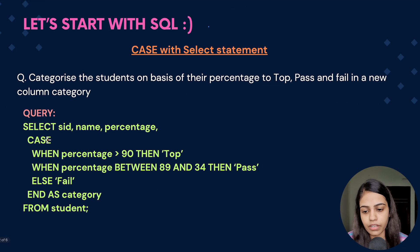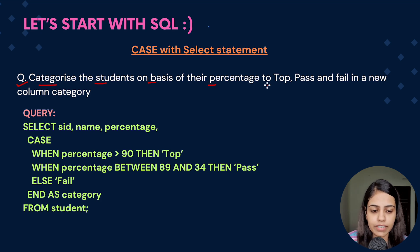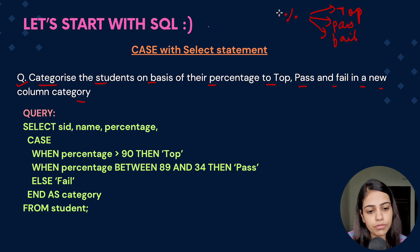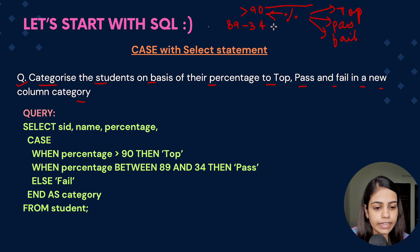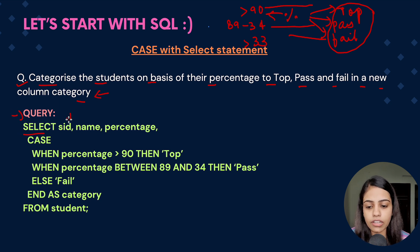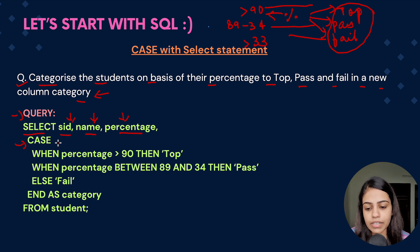Now let's see CASE with a SELECT statement. The question is: categorize students on the basis of percentage into Top, Pass, and Fail in a new column called 'category'. If a student achieves greater than 90% they are Top; if between 34 and 89% they are Pass; if less than 33% they are Fail. The query starts with SELECT, listing student_id, student_name, and percentage.